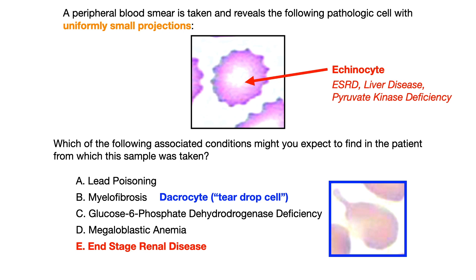Choice B, myelofibrosis, is associated with a dacrocyte. Dacrocytes are occasionally called teardrop cells, and you can see the type of pathologic red blood cell shown in the bottom right-hand corner of the slide — it looks somewhat like the formation of a teardrop. Dacrocytes are associated with myelofibrosis and more broadly with different forms of bone marrow infiltration. If you knew that association, you could have eliminated choice B.